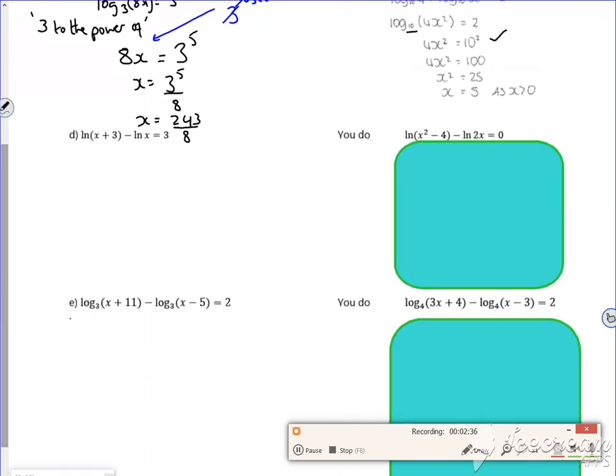Right, so look at this next one then. So let's combine these, put them together. So x plus 3 over x is 3. Opposite of ln is e. So e and ln cancel. I've got x plus 3 over x is e cubed.